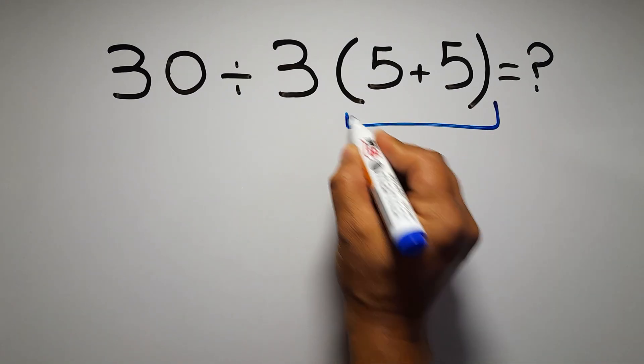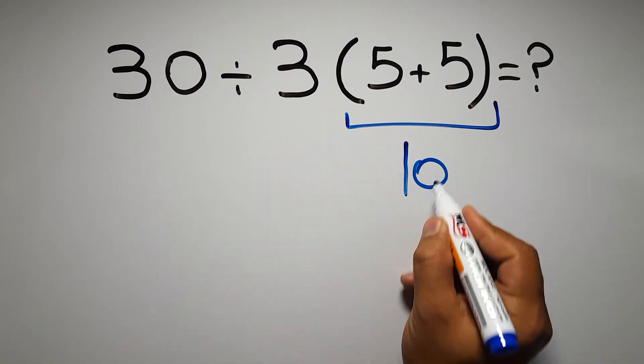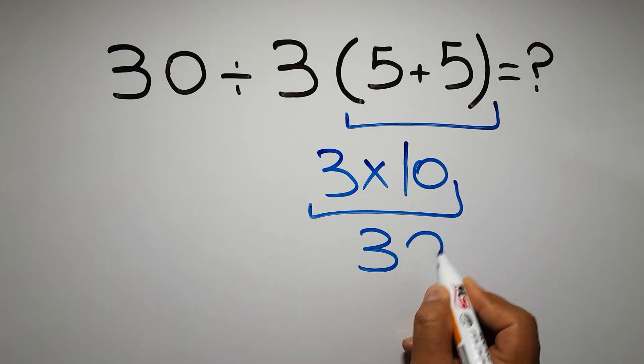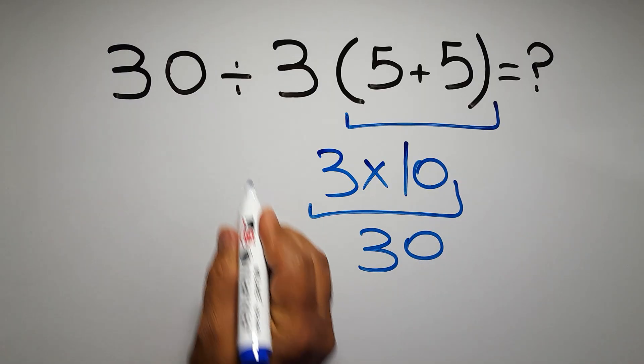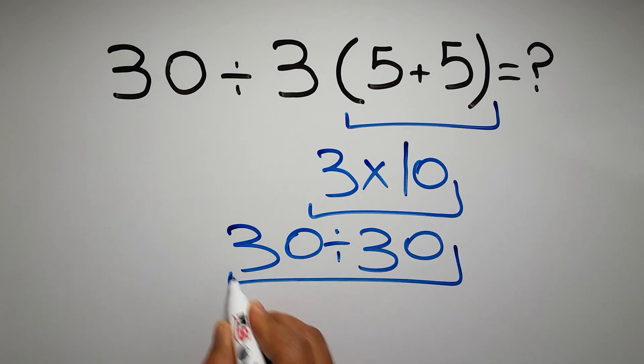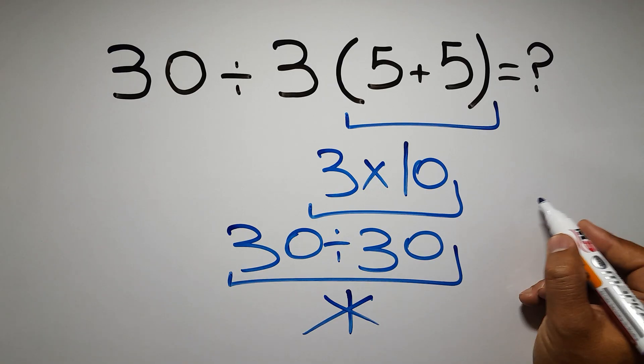5 plus 5 gives us 10 and 3 times 10 is just 30, so 30 divided by 30 gives us 1. But this answer is not correct because according to the order of operations, first we have to do parentheses.